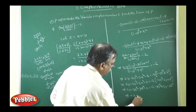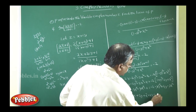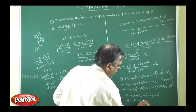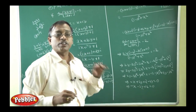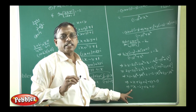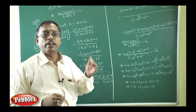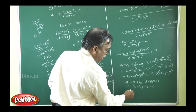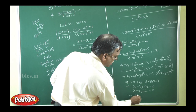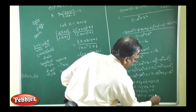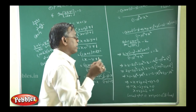Rearranging: −x + 2y − 4y + 2 = 0, which gives −x − 2y + 2 = 0. Multiplying throughout by −1 (since the general form of a straight line is Ax + By + C = 0): x + 2y − 2 = 0. The locus of P is x + 2y − 2 = 0, which is a straight line.